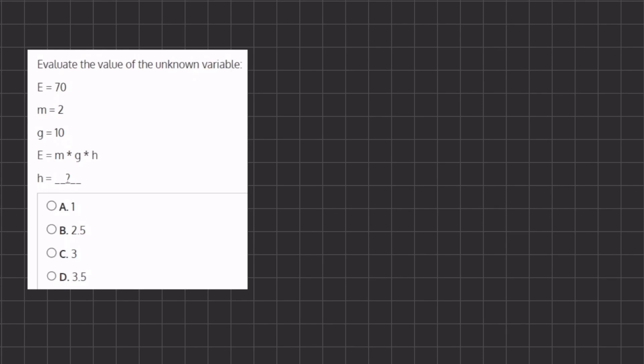In this problem we want to evaluate the value of our unknown variable, and in this case it's going to be h. We are given an expression to solve for the value of h, but we need to plug in all the values that we know and isolate this h in order to find its value. This is possible because we are given the value of e, m, and g.